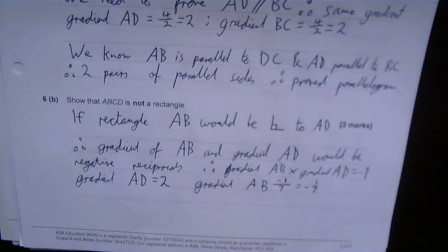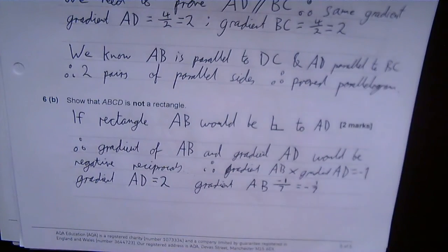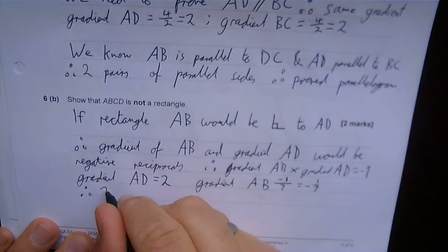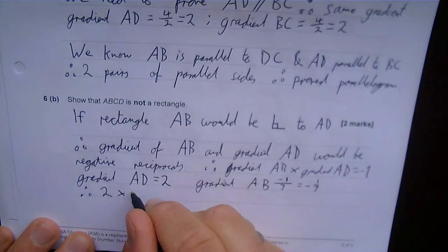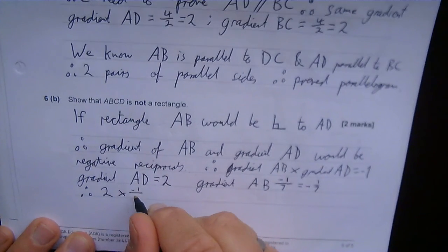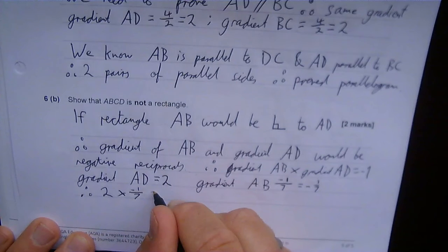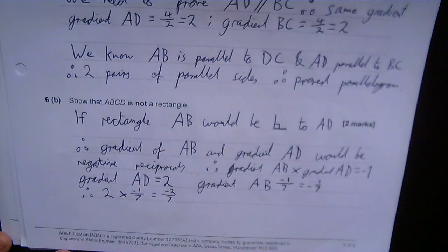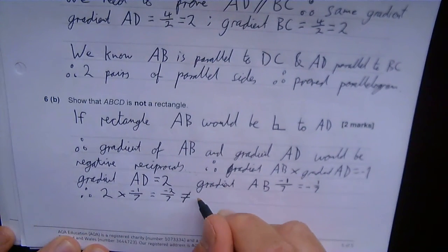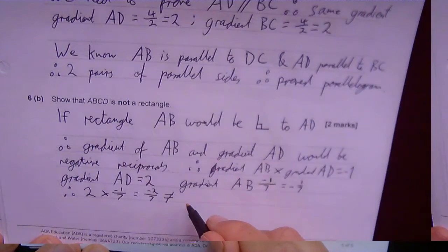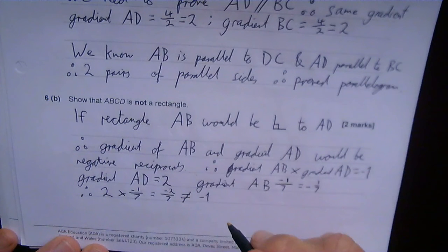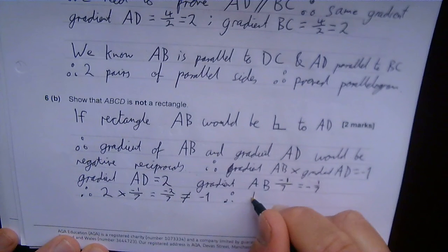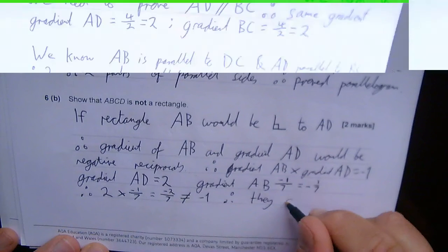So what I've got, these need to multiply together to give -1 for them to be negative reciprocals. So I'll show that that doesn't work. Therefore, 2 times by -1/7 equals -2/7, which is not equal to -1. Therefore they are not perpendicular.